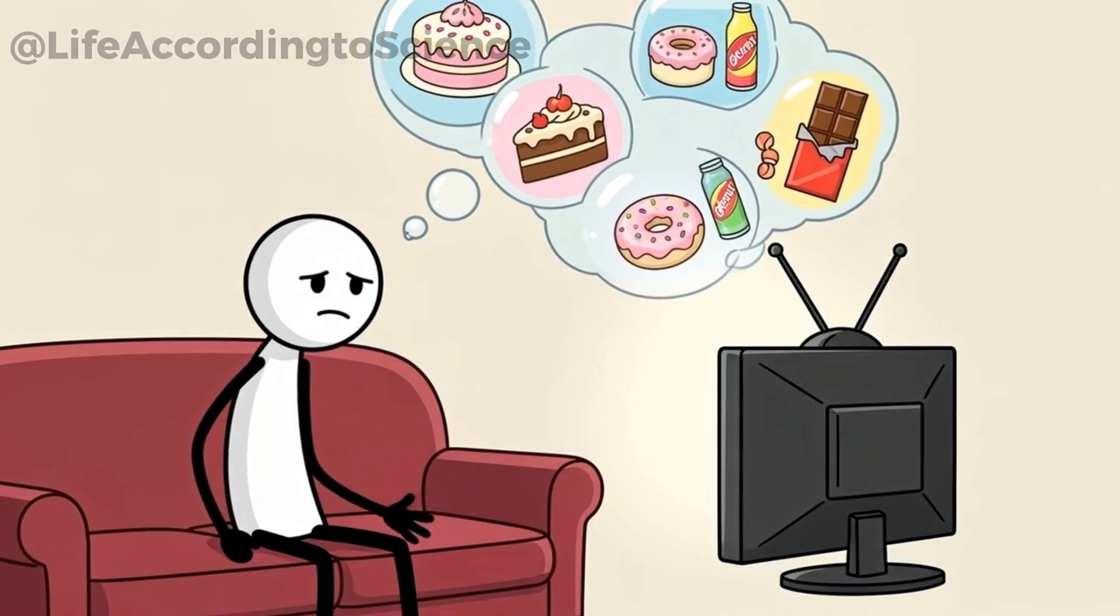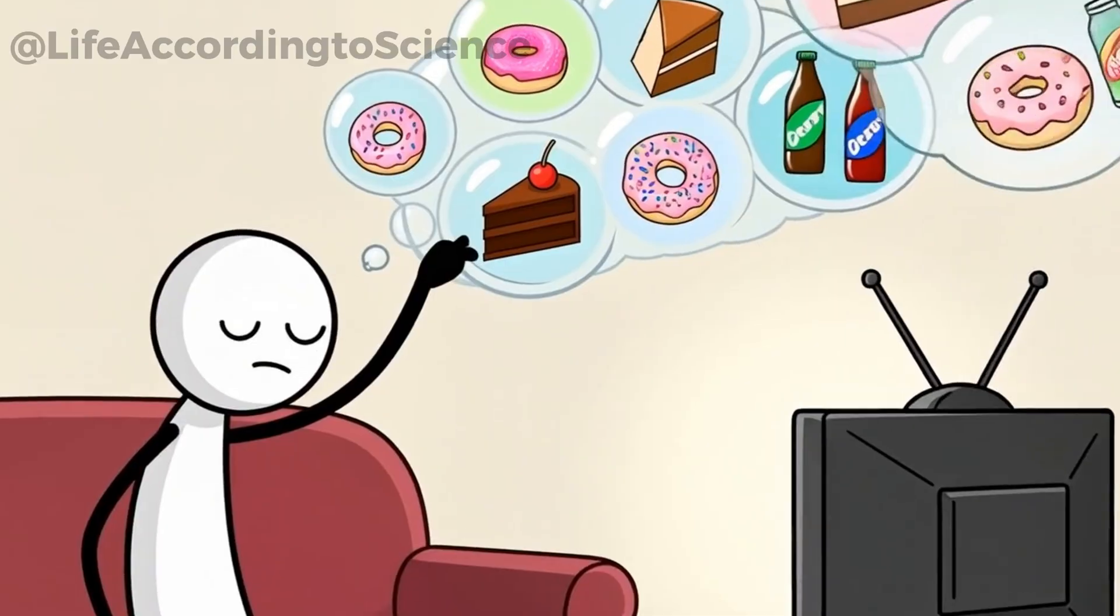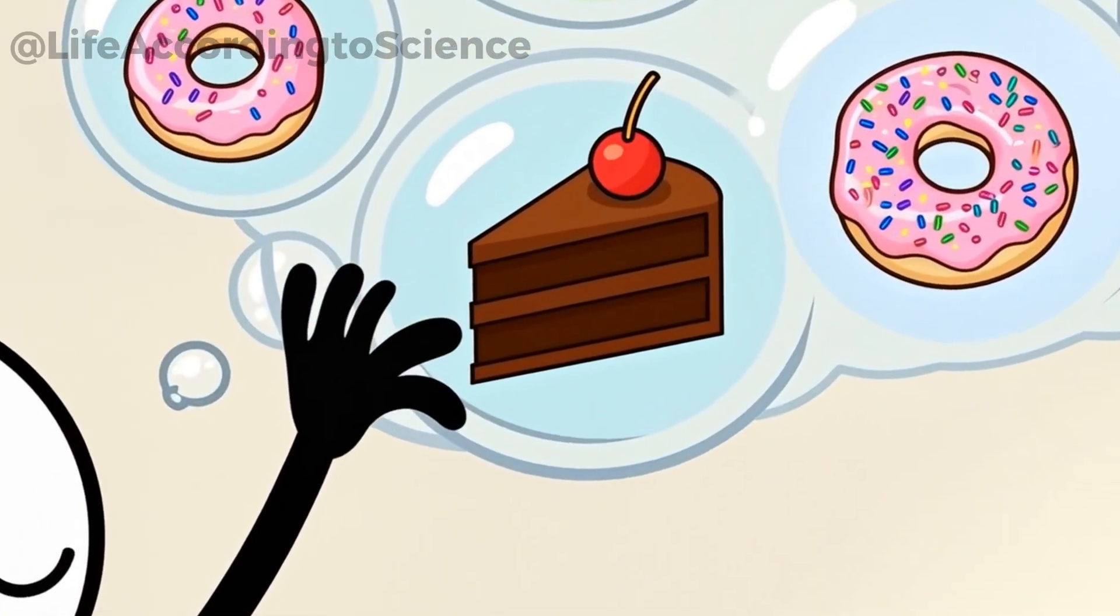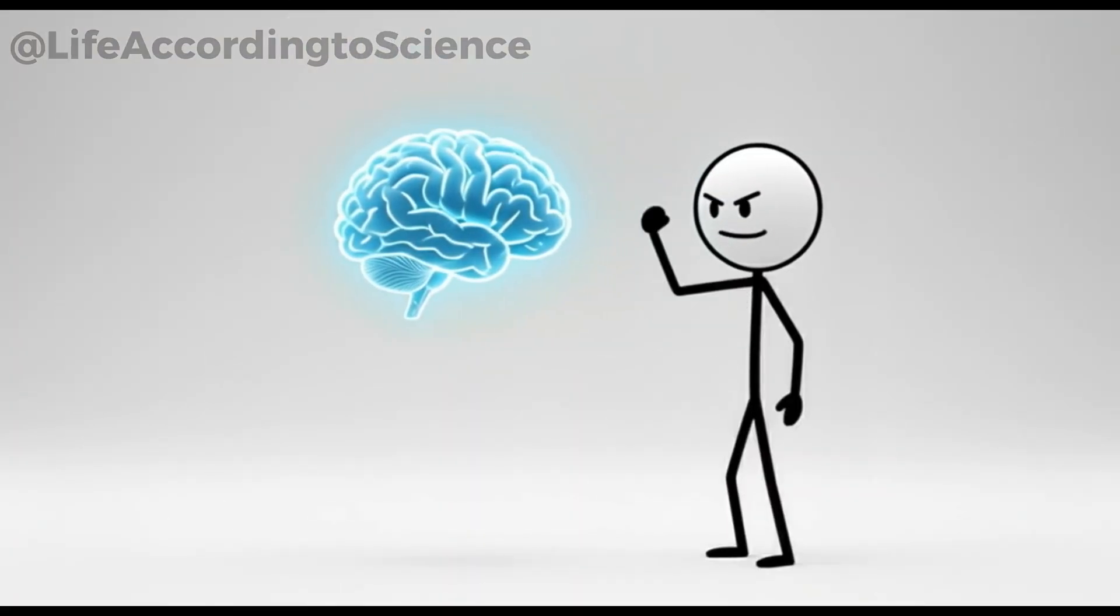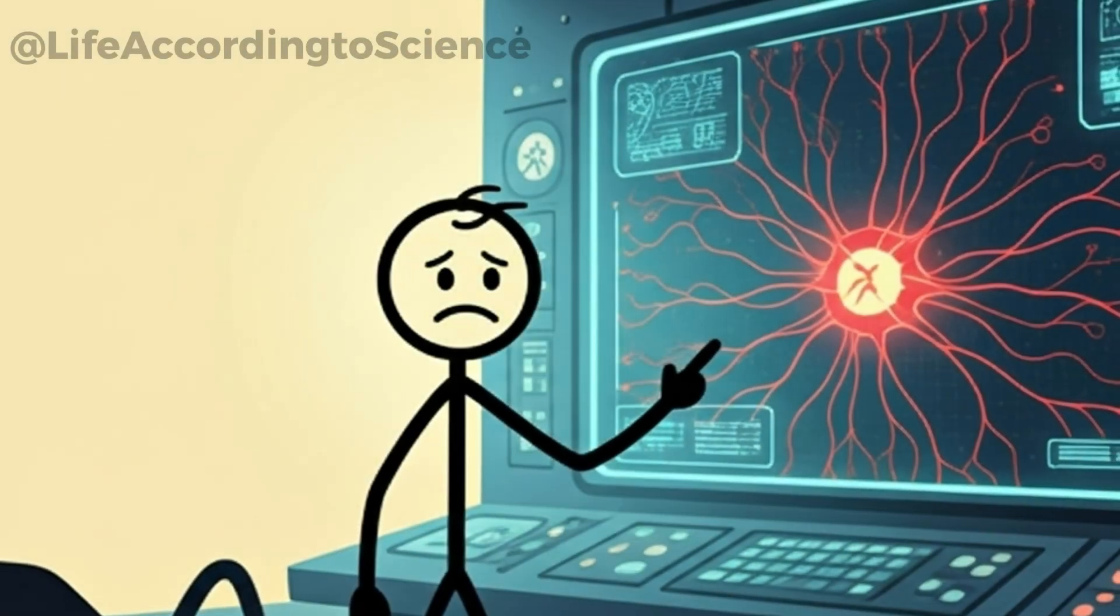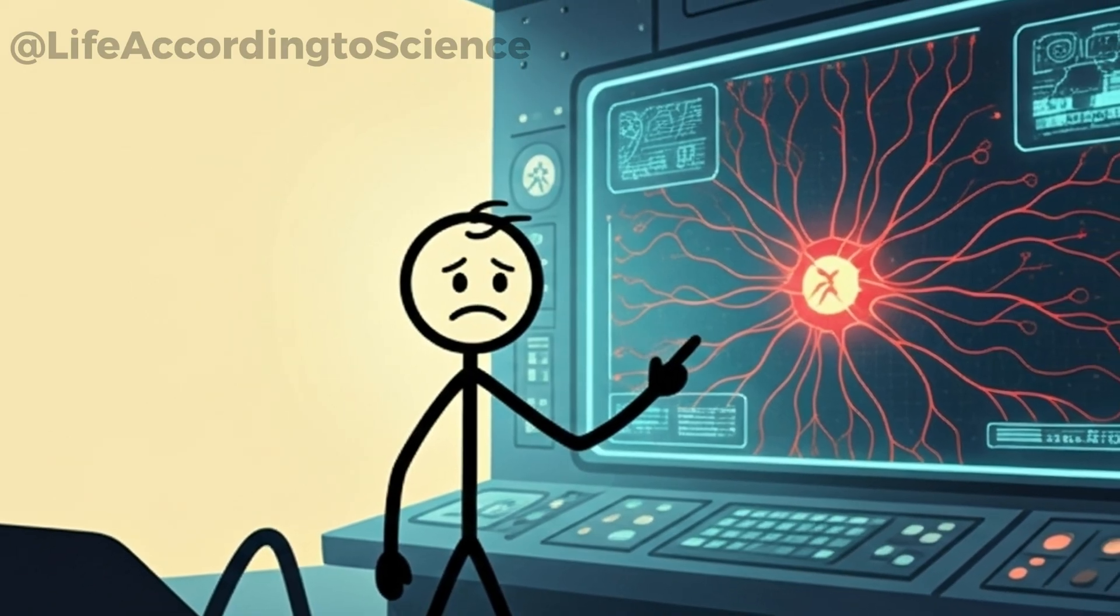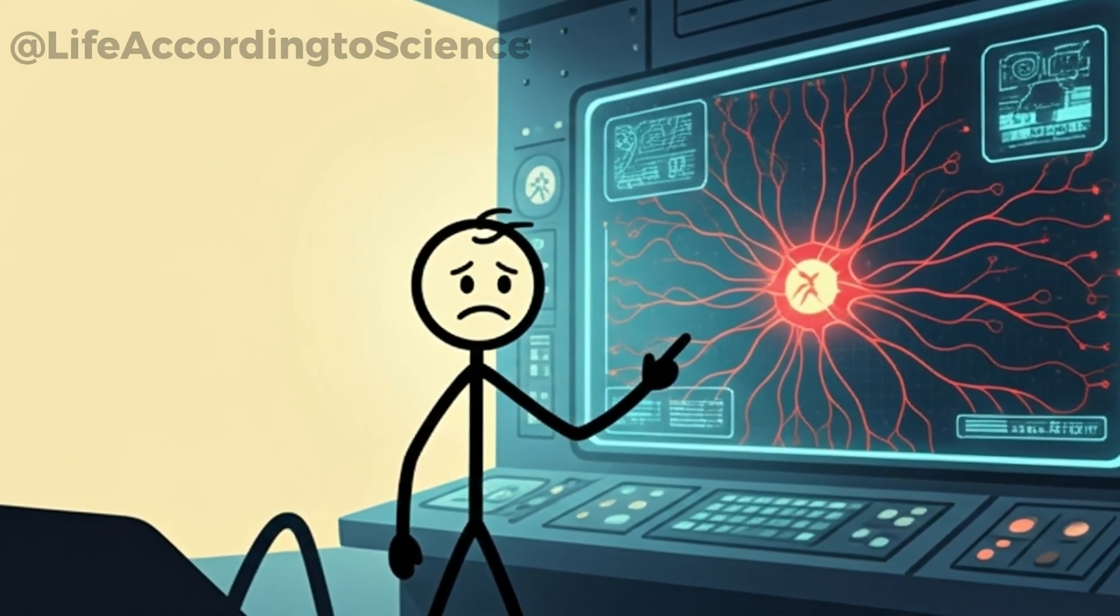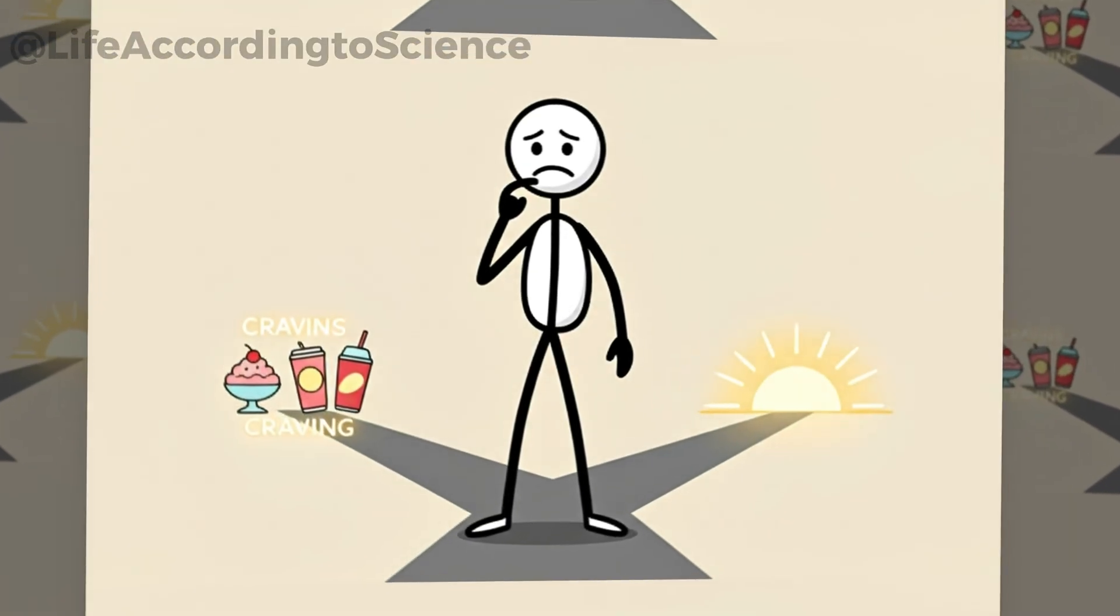Every dessert, candy bar, or soda commercial suddenly feels 10 times more tempting. You may even dream of sweet foods as your brain tries to convince you to give in. It's not weakness, it's biology. But here's the twist. Every time you resist, your brain slowly adapts. The neural pathways that were constantly activated by sugar begin to quiet down. It's like teaching your brain to enjoy life without constant dopamine spikes. The question is, can you push through these mental cravings long enough to reach the turning point?